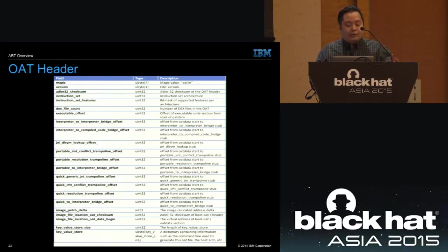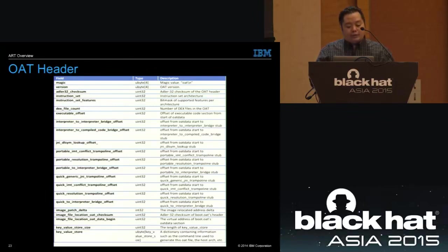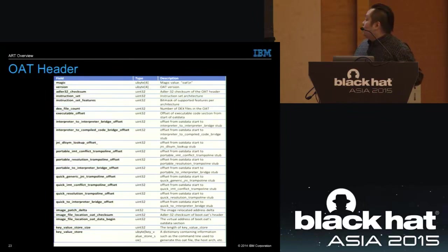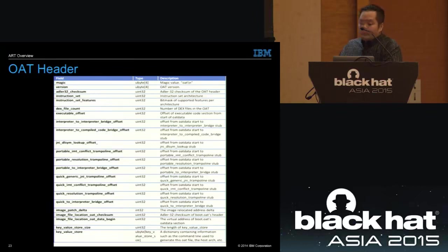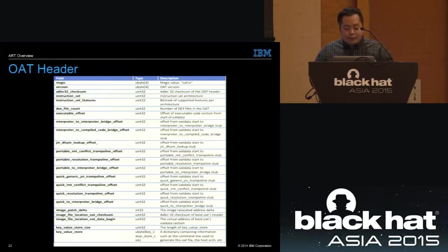The executable_offset field in the OAT header is the offset to the executable code relative to the start of the OAT header — the same section pointed to by the oatExec section. Another relevant field is the key-value store, a dictionary containing information such as the command line used to generate the OAT file, which we'll use later.